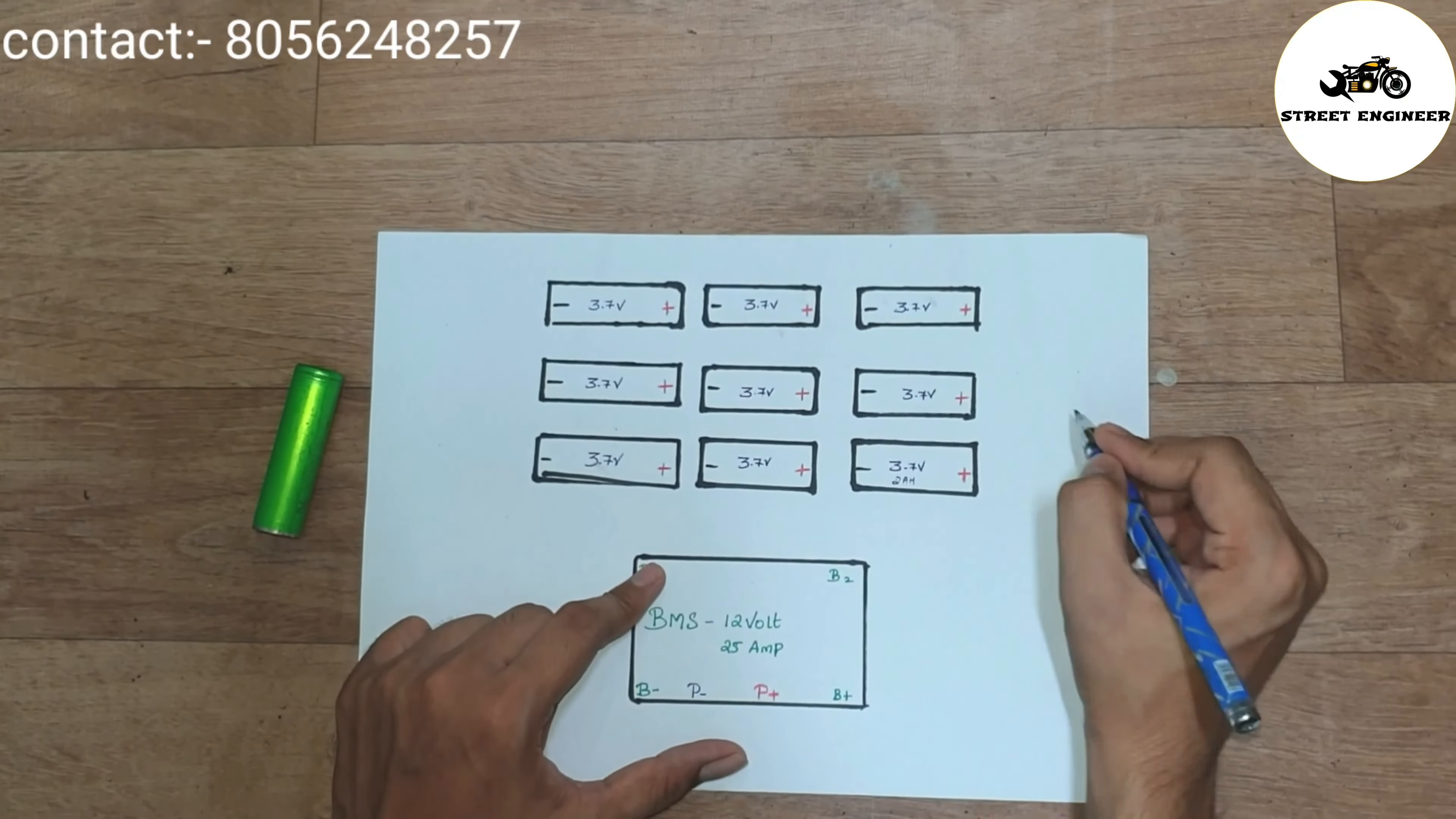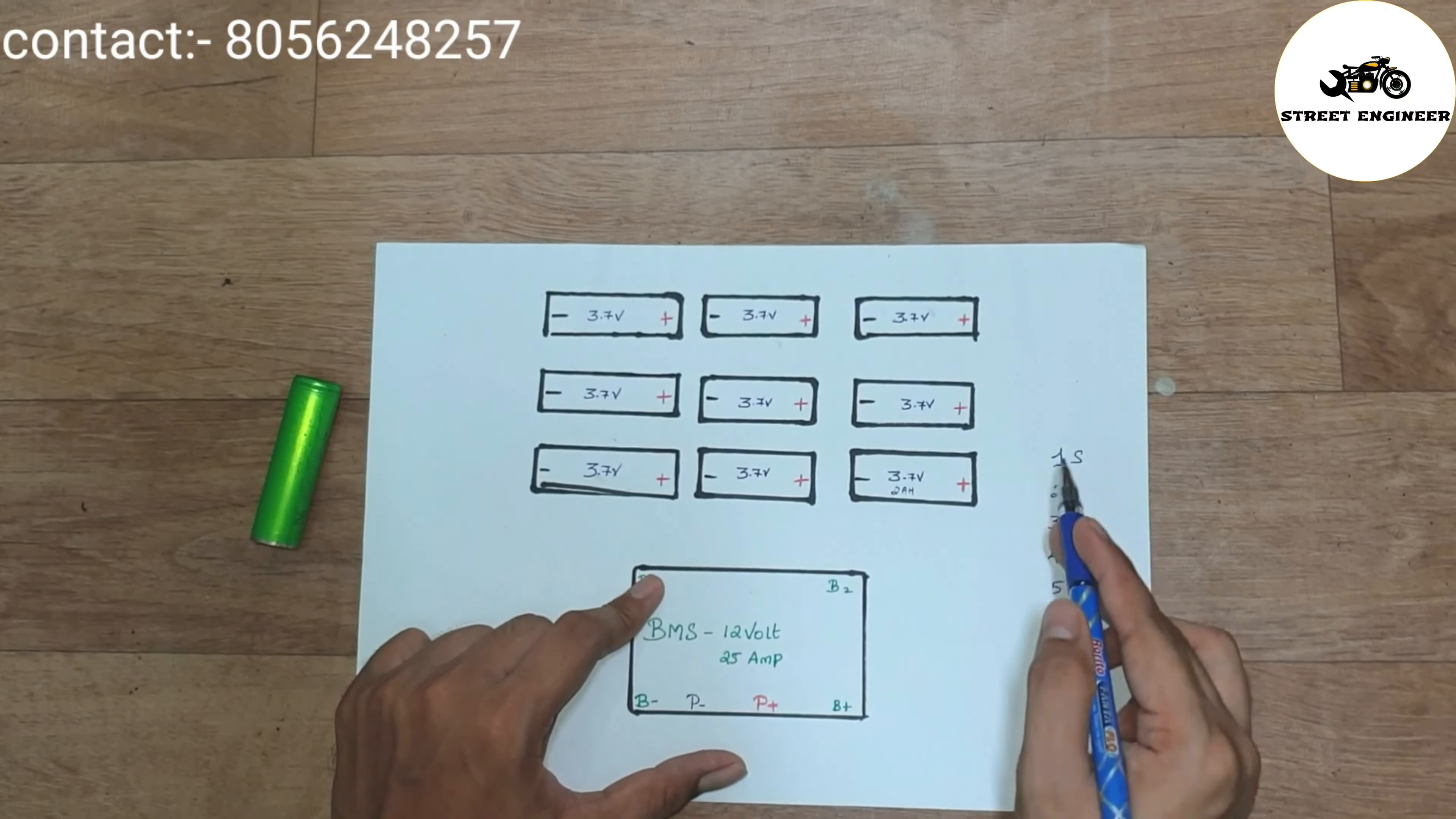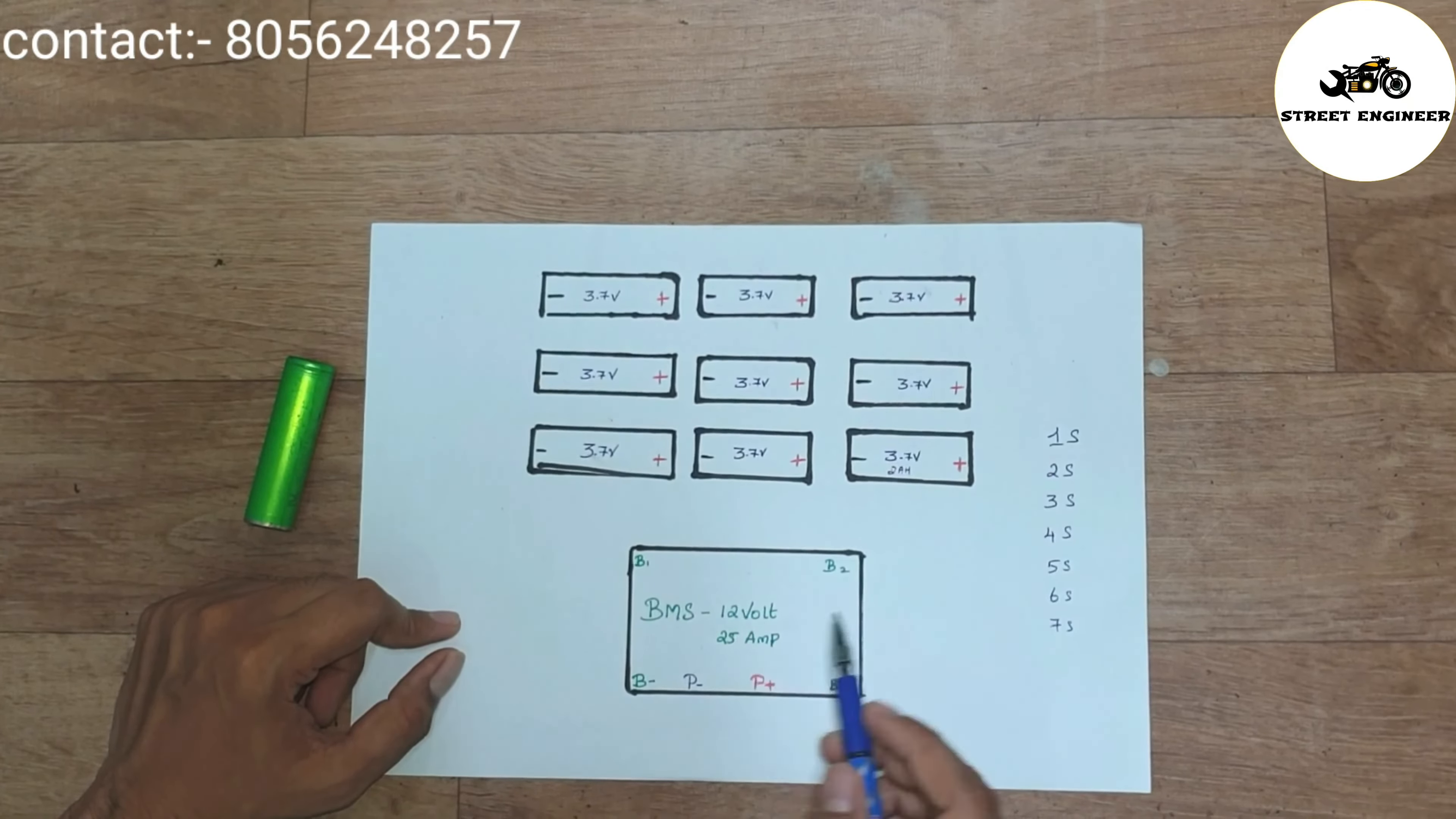There are many BMS specifications available in market, such as 1S, 2S, 3S, 4S, 5S, 6S, 7S and so on. So guys, this 12V 25A BMS, we can call it as a 3S BMS board.